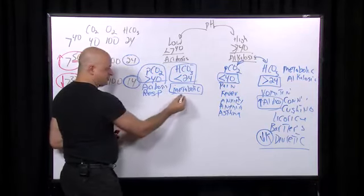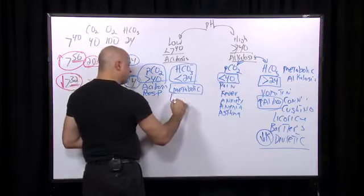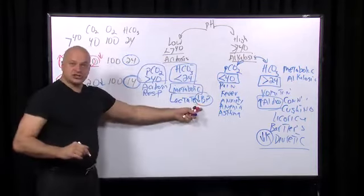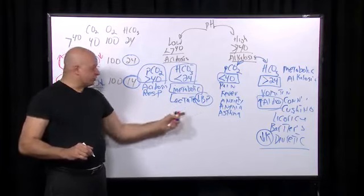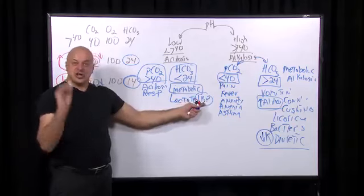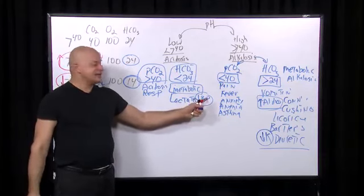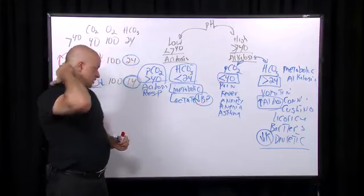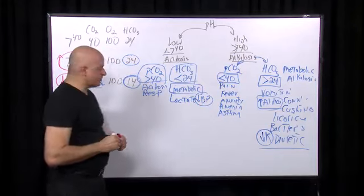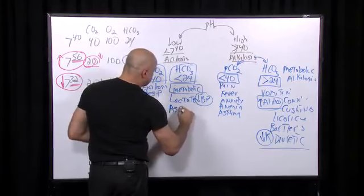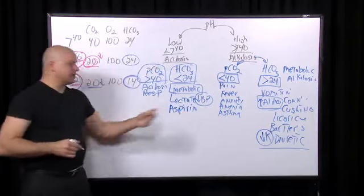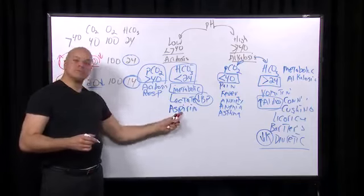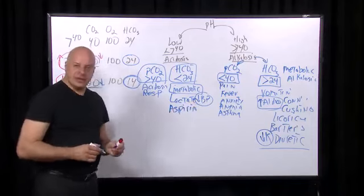Causes of primary metabolic acidosis include lactic acidosis — anything that causes low blood pressure: sepsis, anaphylactic shock, neurogenic shock, cardiogenic shock, gram-negative endotoxin. These cause anaerobic metabolism and raise lactate. Aspirin can also cause metabolic acidosis because it poisons the mitochondria, producing a lactic acidosis.